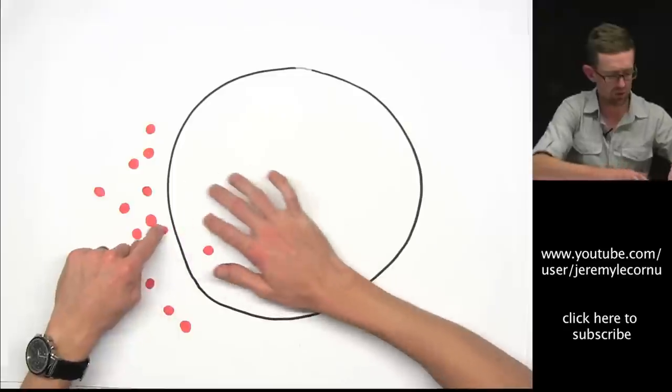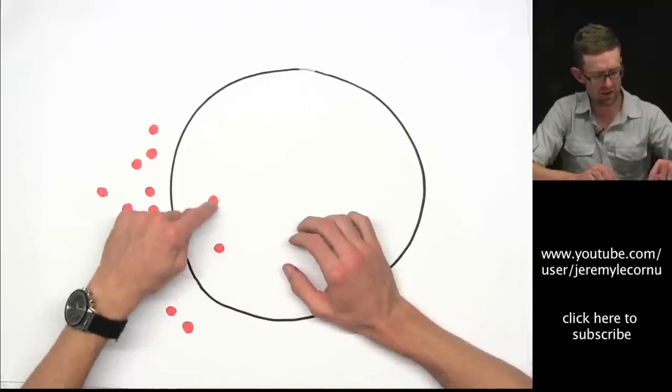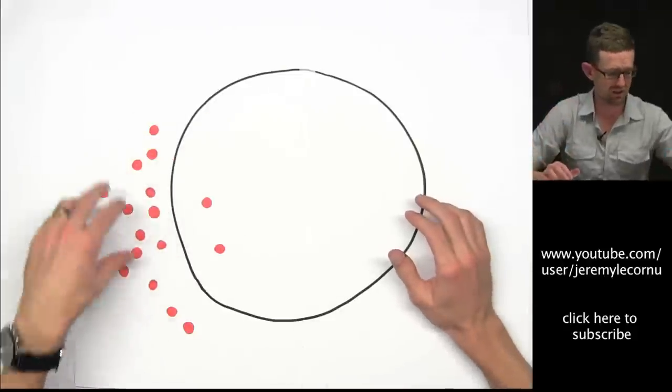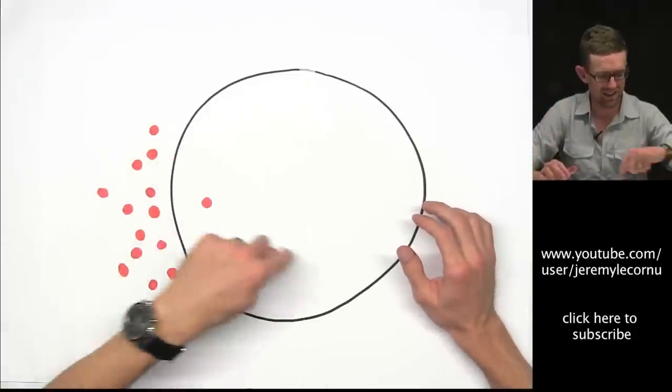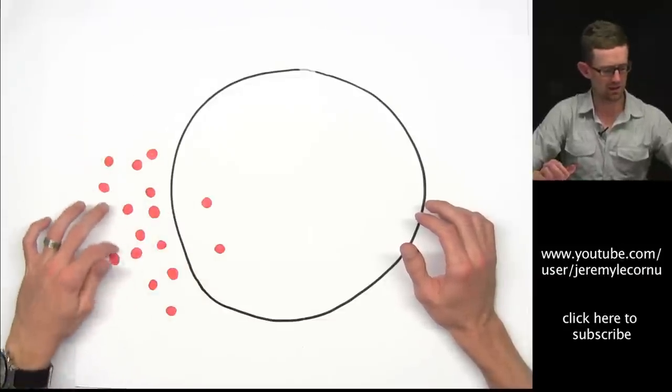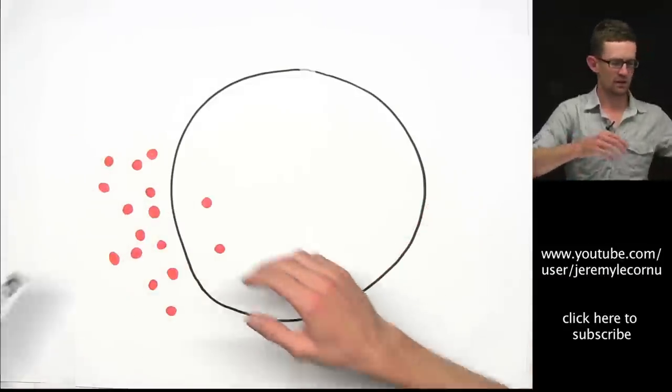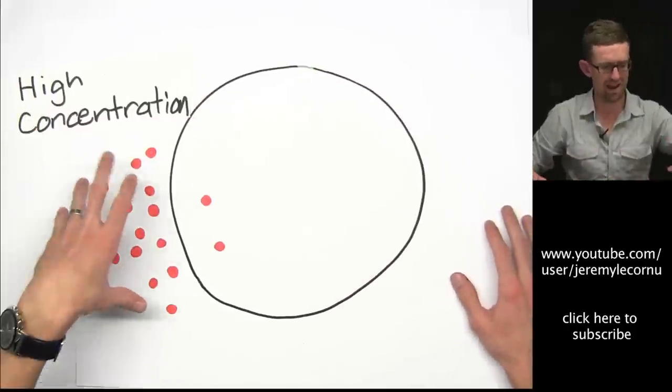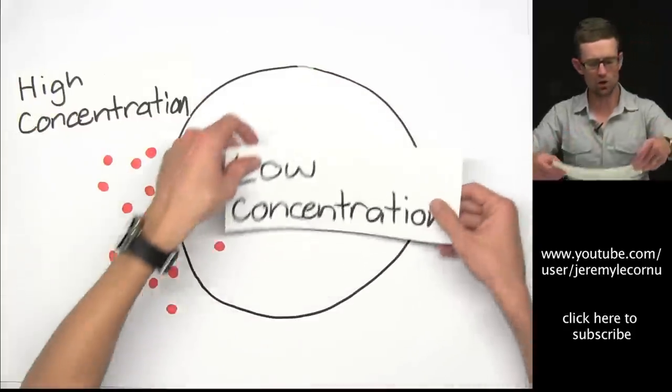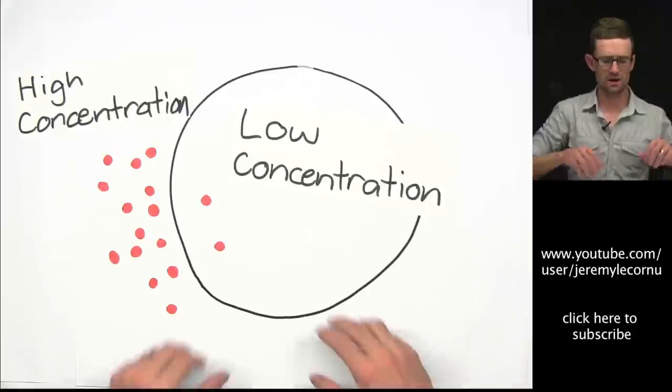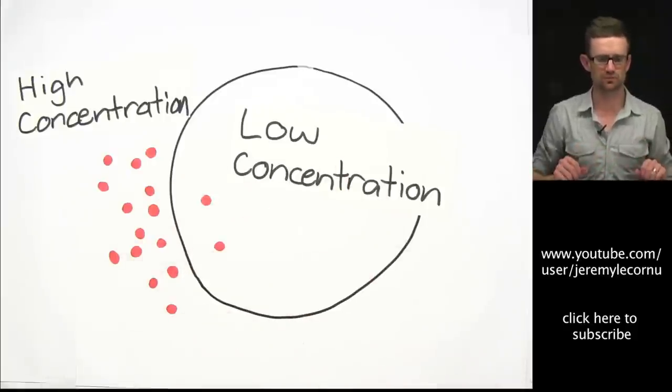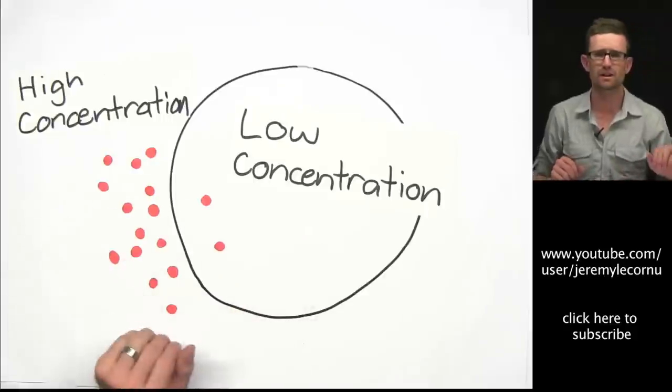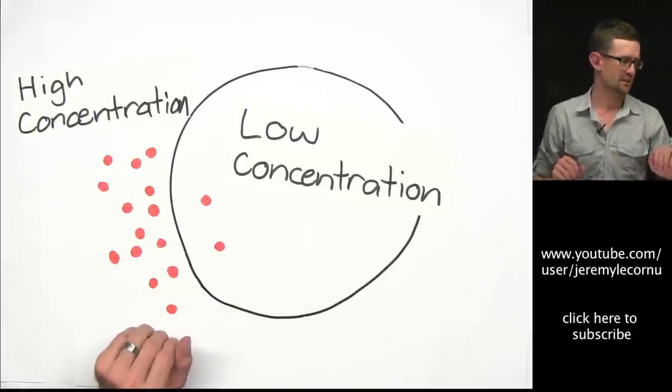So if it's small enough to move across the membrane, if it doesn't have too much of a charge which stops it from moving across, and if it is soluble with lipids, it can move across. Now I've set this up so that we have a high concentration of particles outside of the cell and a low concentration of particles inside of the cell. We call this a concentration gradient. It's where there's a difference in the concentrations.